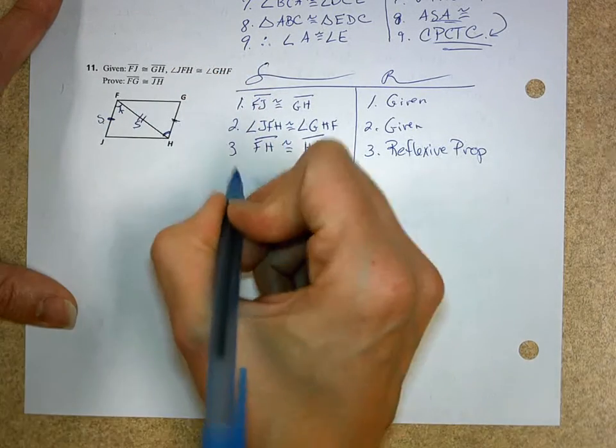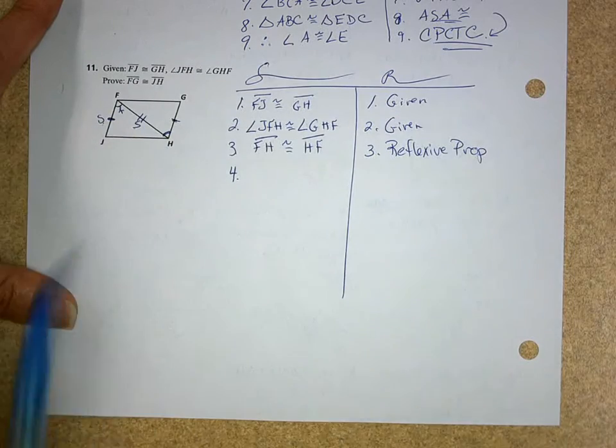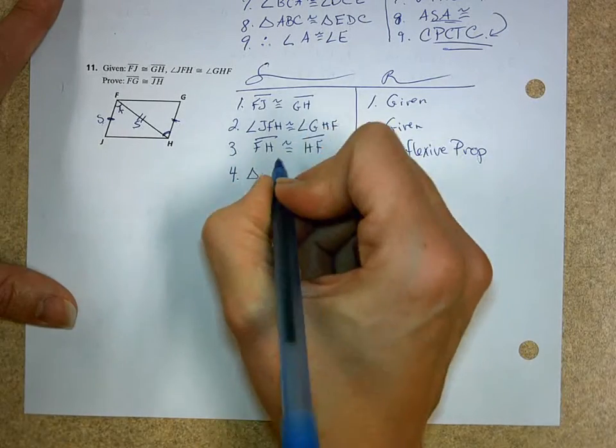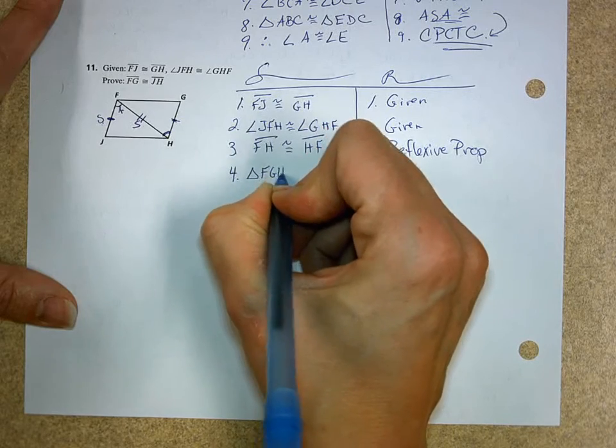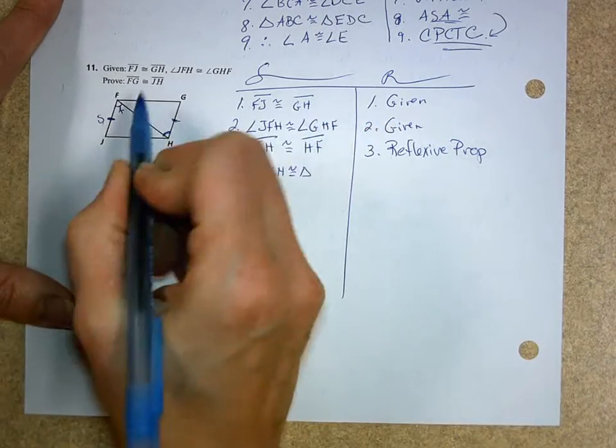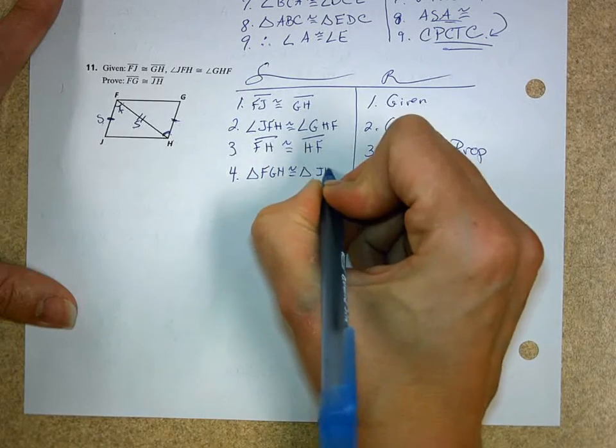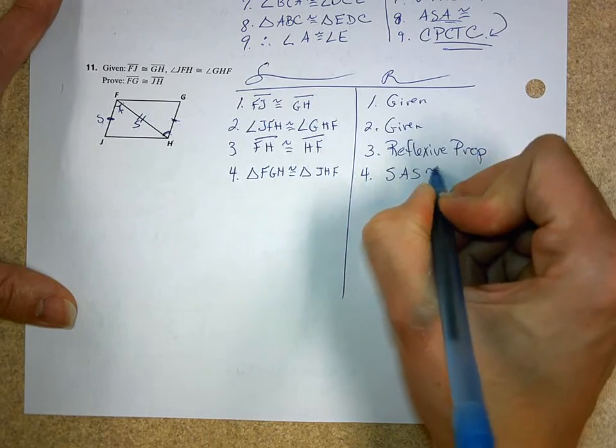Now, when I do that, notice what I have marked. Side, angle, side. And notice the key for me when proving triangles congruent is I mark my pairs of congruency, my sides and my angles. It lets me know what I have. So I can say triangle, let's just do this one, FGH is congruent to triangle. If I go FGH, I'm going to have to go JHF. And the reason for that would be side, angle, side, congruence.